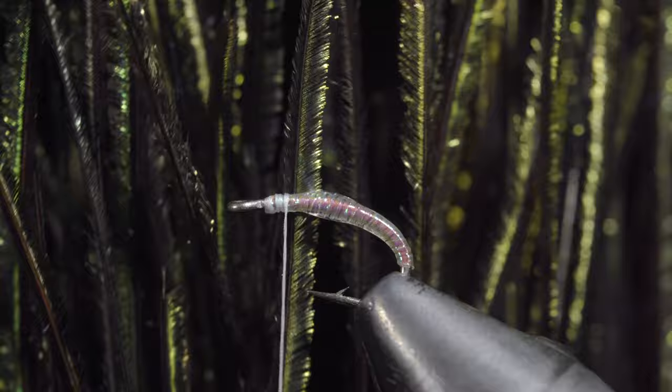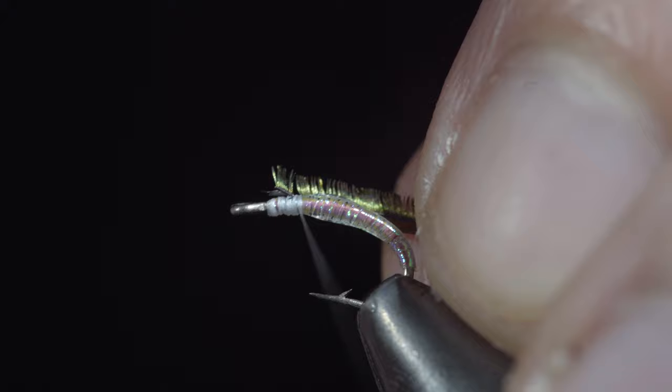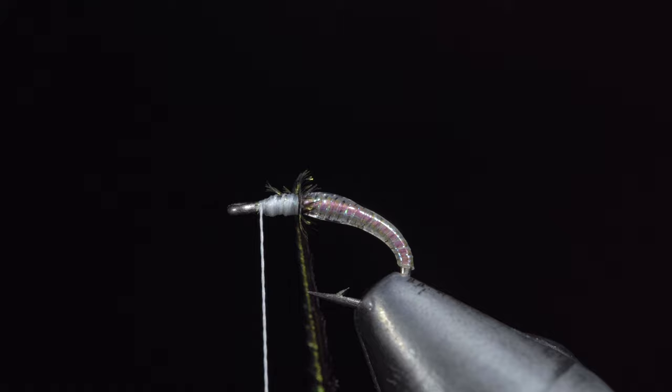Select a single strand and secure it to the head of our fly. Once secure, we'll begin hackling our ostrich hurl towards our thread, doing so in closed touching spirals.